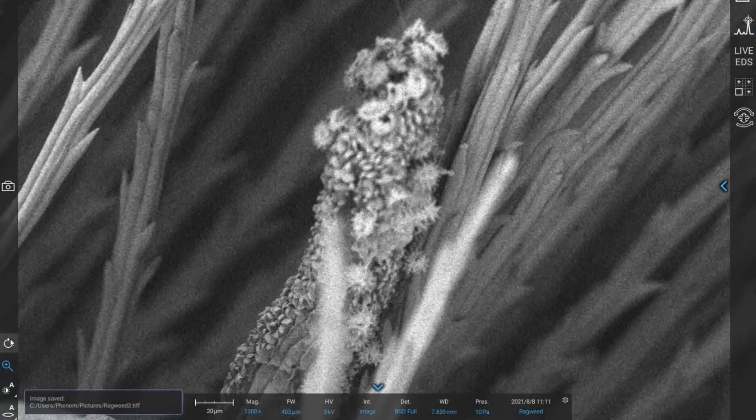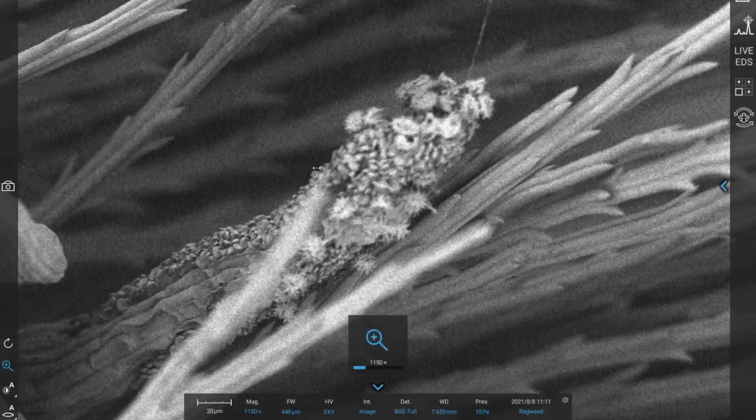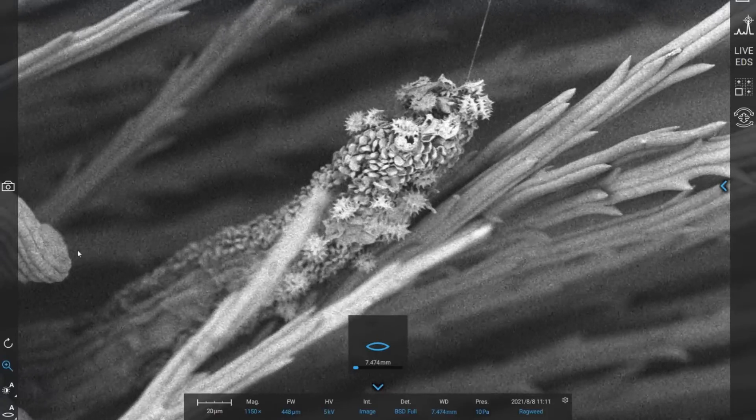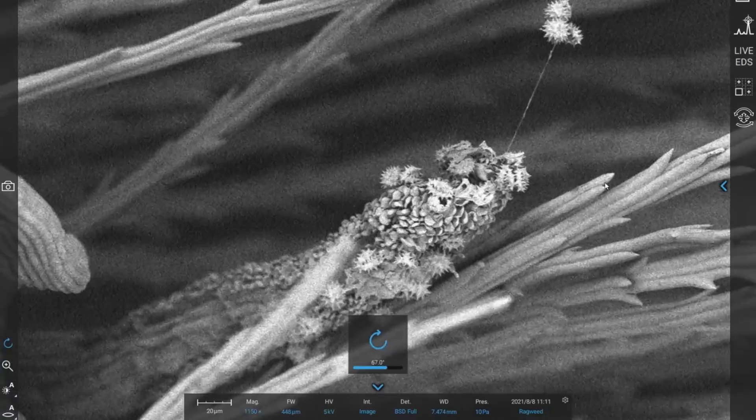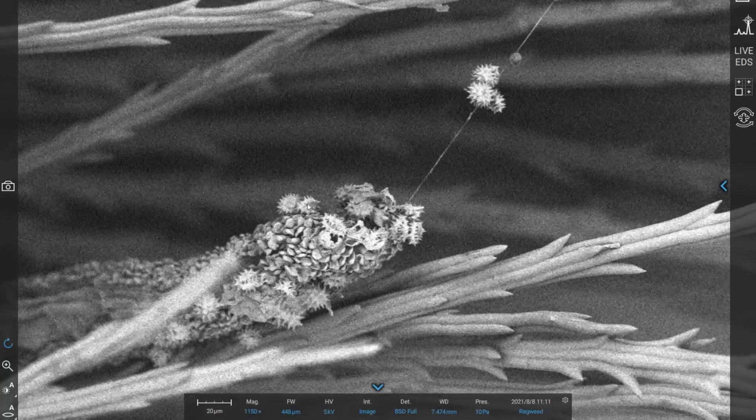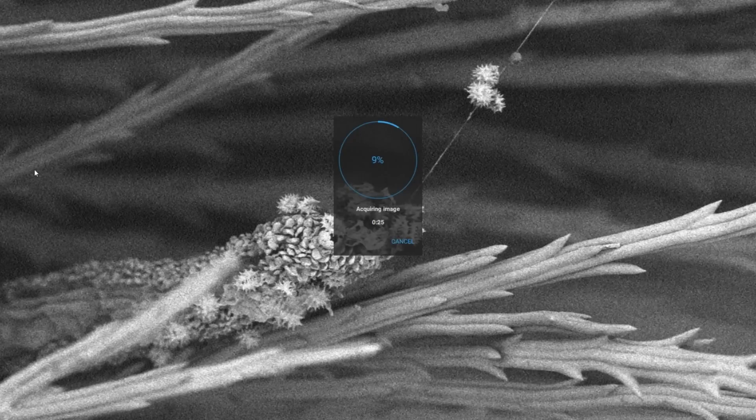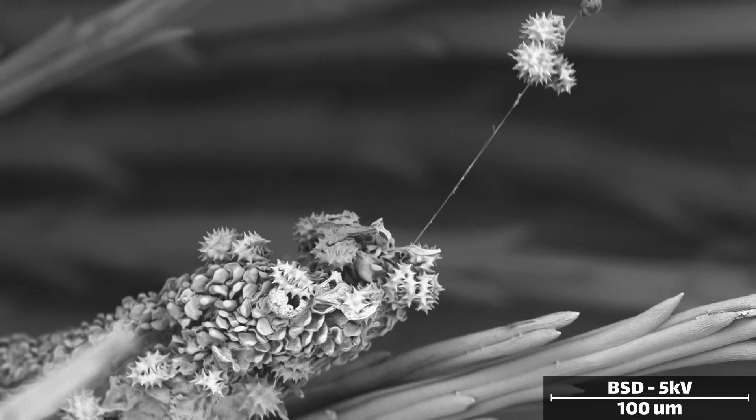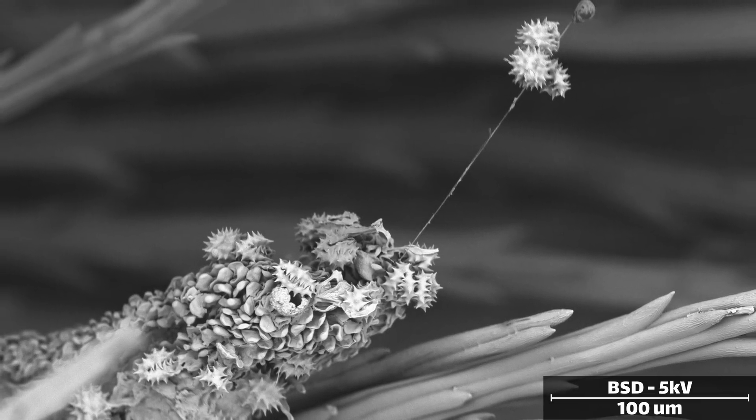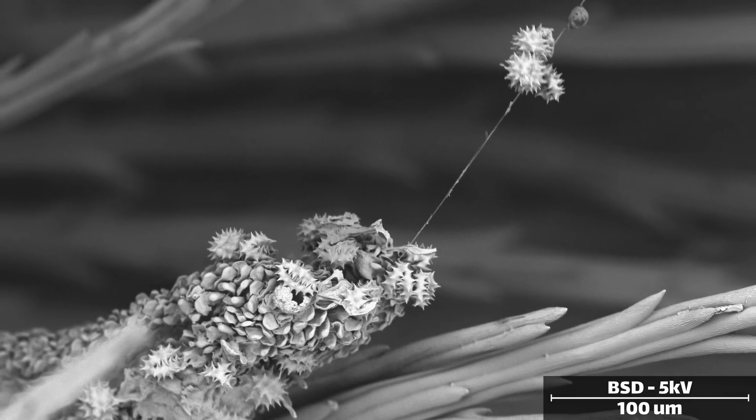Goldenrods are pollinated by insects - bees, wasps, hornets, and the like - which means their pollen needs to be relatively heavy and sticky so that it adheres to the insect. If it was light enough to blow on the wind, it would be blown right off the pollinators. Because of this, goldenrod pollen has a very distinctive spiky appearance.